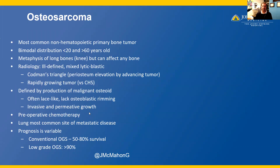The lung is the most common site of metastatic disease. The prognosis of osteosarcoma is quite variable, with conventional osteosarcomas having 50% to 80% survival. However, the low-grade osteosarcoma variants have a relatively good prognosis at more than 90% survival.